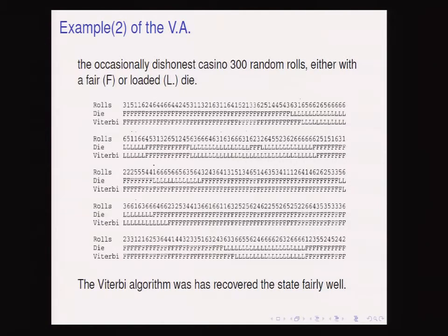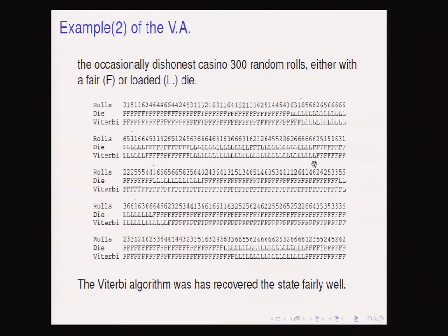Investigating the casino with the Viterbi algorithm: we went to the casino and recorded 300 rolls. We don't know whether they resulted from a fair or loaded die, but we have a hidden Markov model of the casino. Running Viterbi, the first line shows the recorded rolls, the second is the ground truth only the casino knows, and the third is the Viterbi prediction. There are small mismatches but overall the algorithm has recovered the state fairly well.